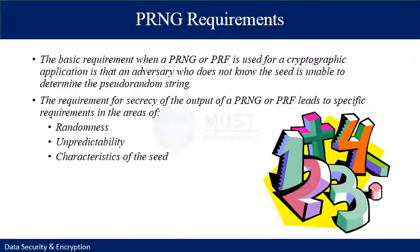The basic requirement for a PRNG or PRF used in a cryptographic application is that an adversary who does not know the seed is unable to determine the pseudo-random string. The requirement for secrecy of the output leads to specific requirements in the areas of randomness, unpredictability, and characteristics of the seed. For example, if the pseudo-random bit stream is used in a stream cipher, knowledge of the bit stream would enable an adversary to recover the plaintext.